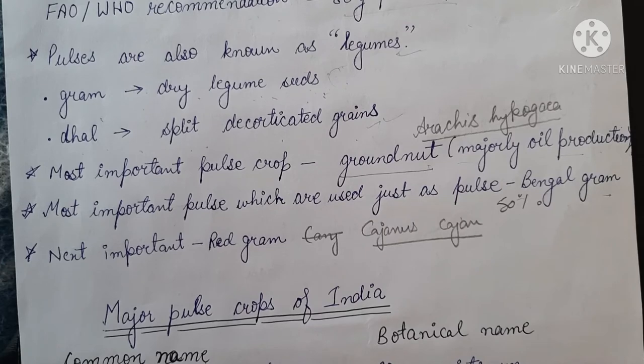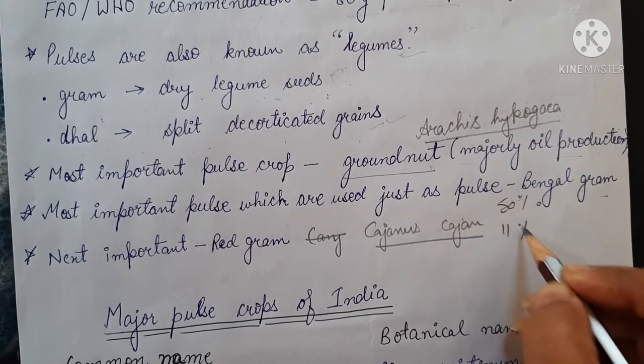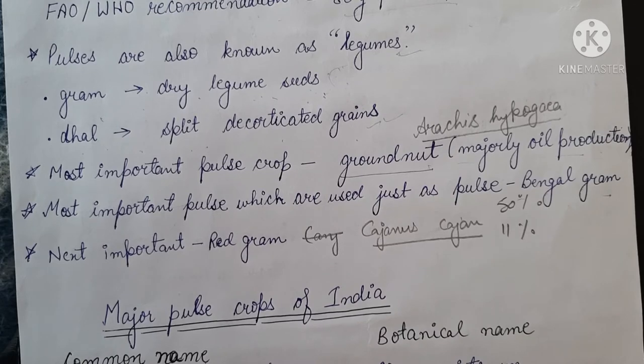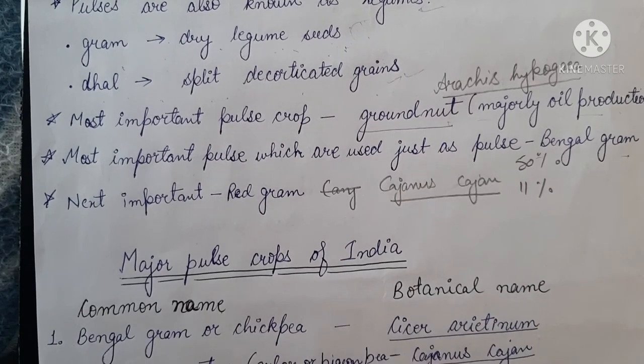Red gram accounts for about 11% of total pulse production in India.